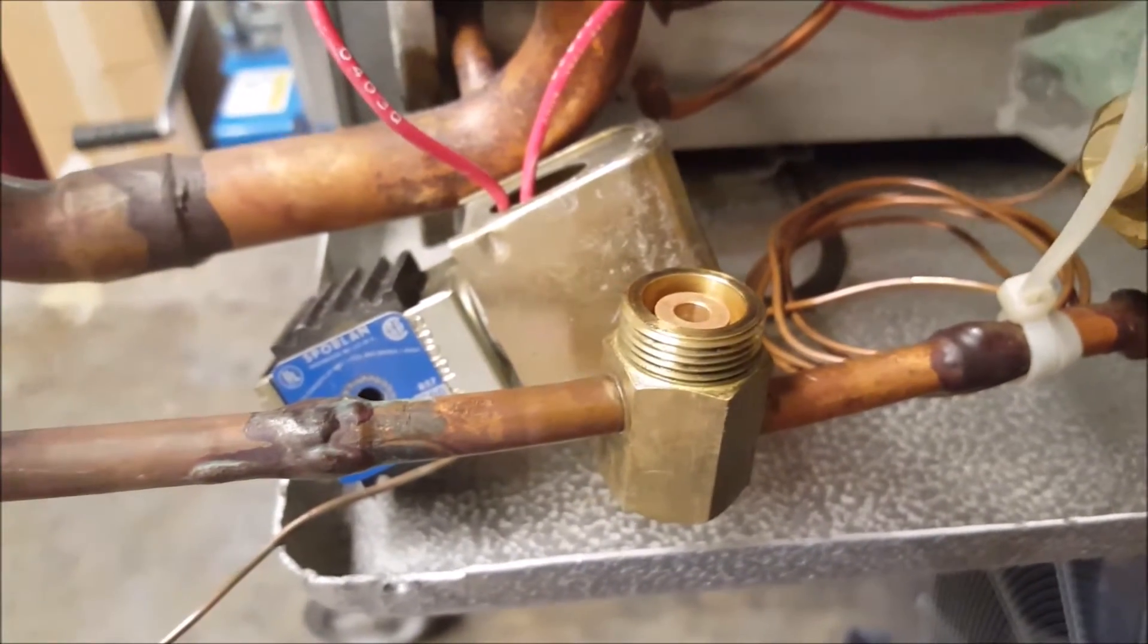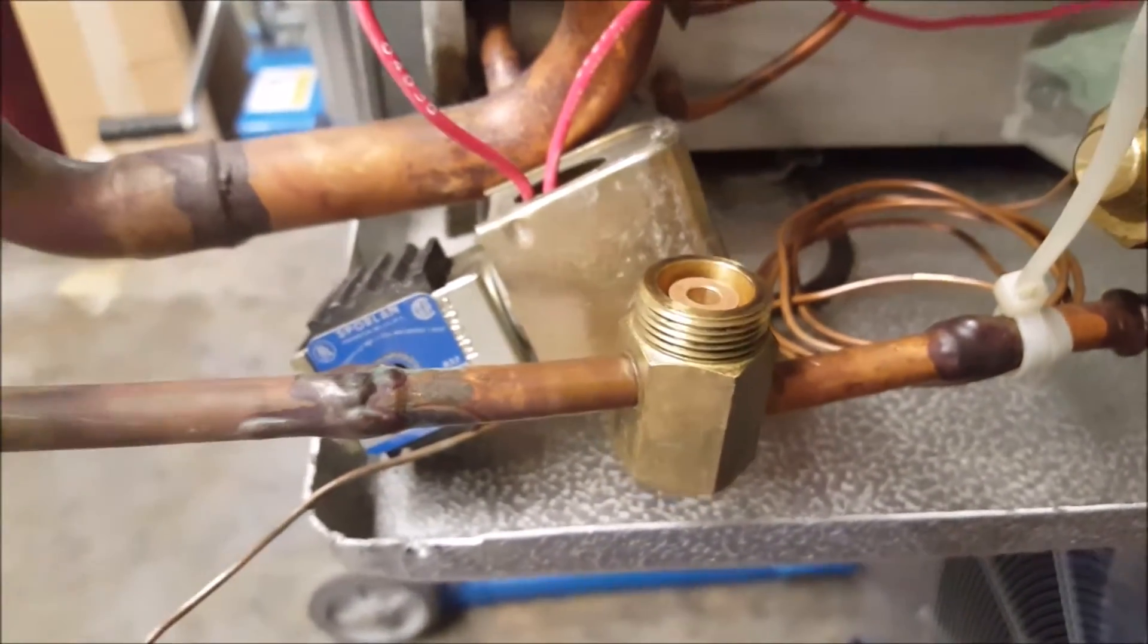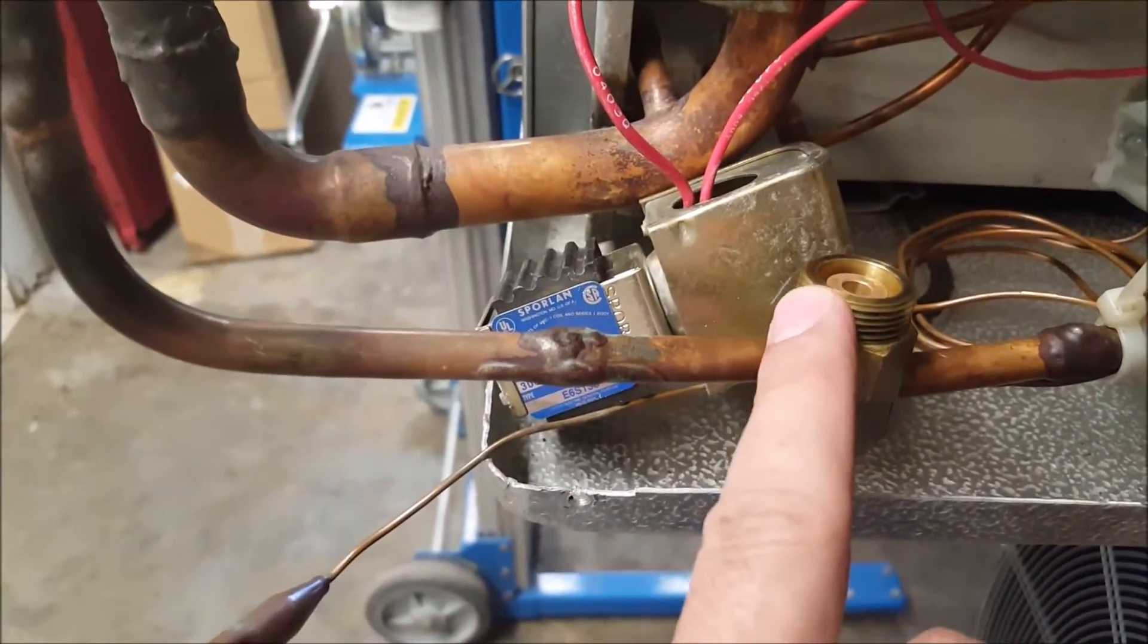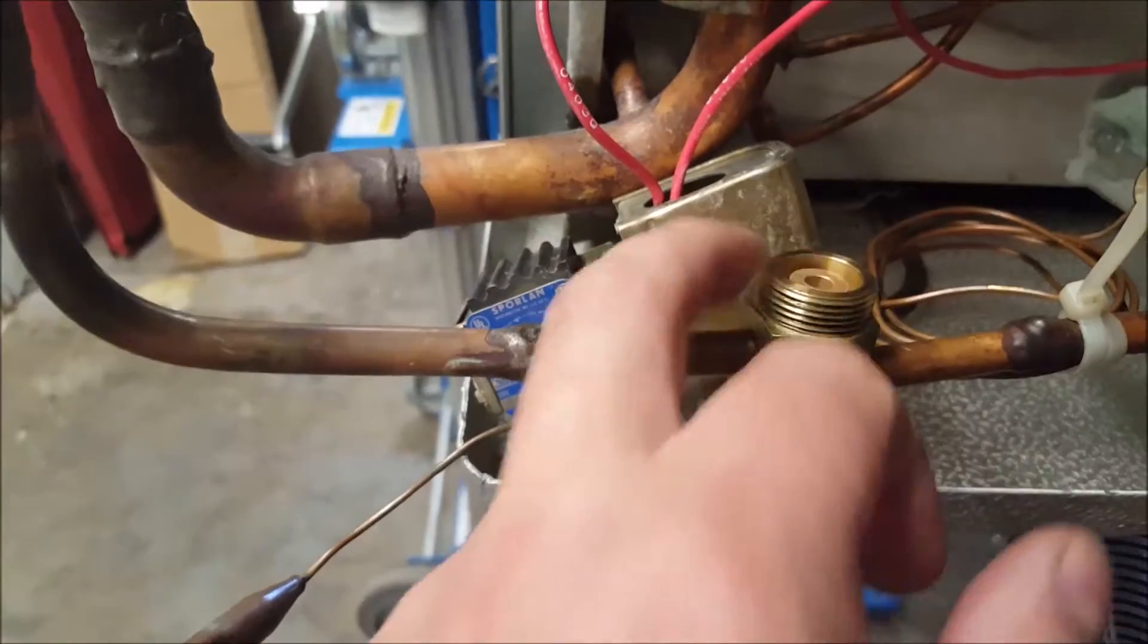Once you put it back together, one of the things you need to leak check besides your joints is going to be whether or not you tighten this properly and make sure it's not leaking. Make sure your seal's in there properly.